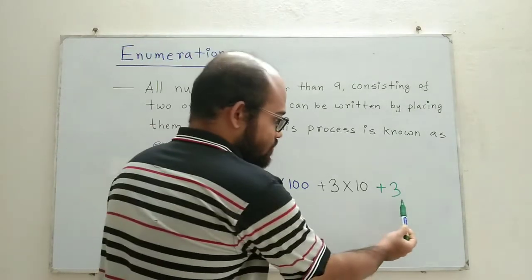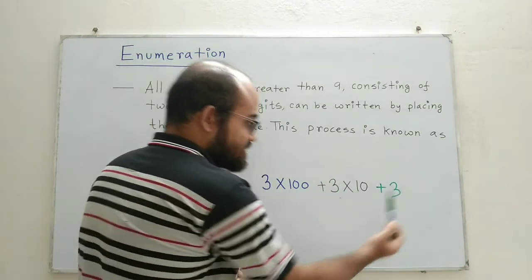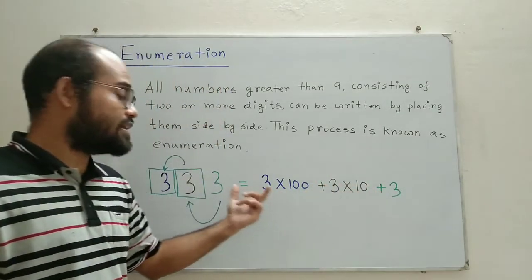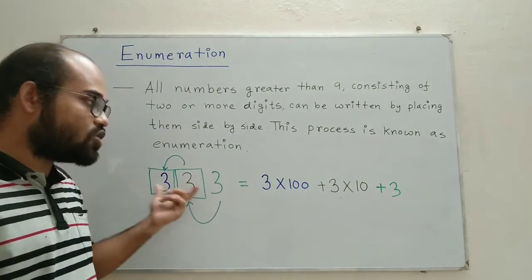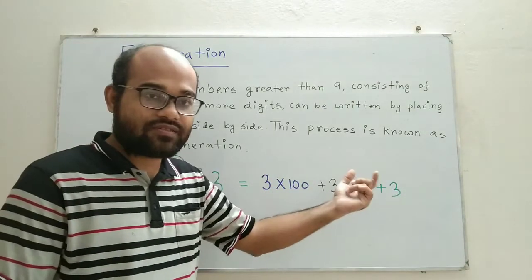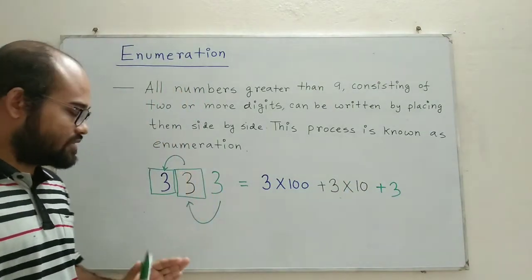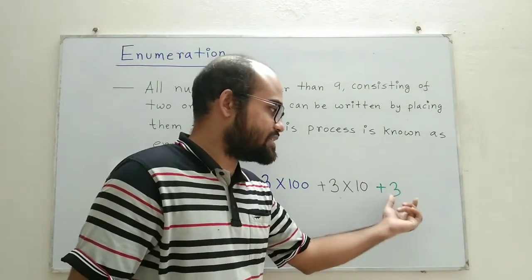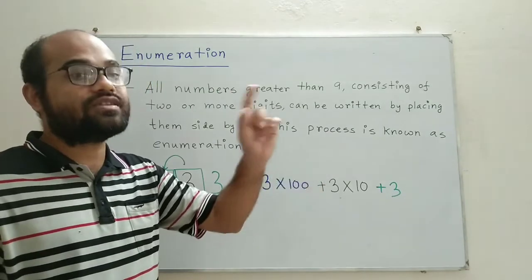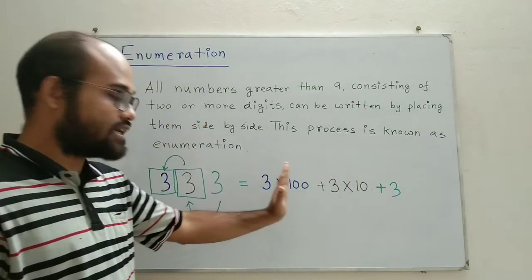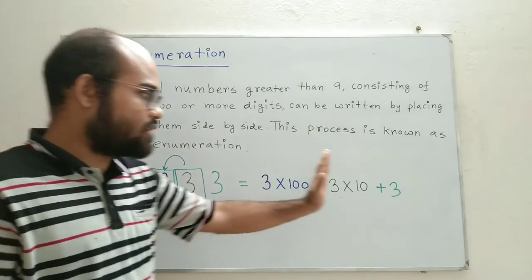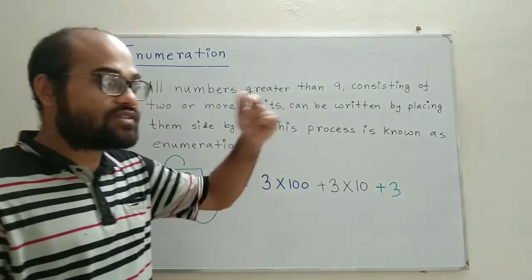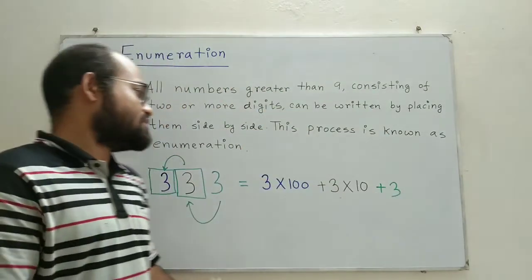As you can see, although these 3's have the same intrinsic value, because of their position that they occupy in a number, their value changes. Only the digit on the extreme right corner expresses a number equal to itself, but as we move successively to the left, the value of the number being represented by the digit increases 10 times successively.